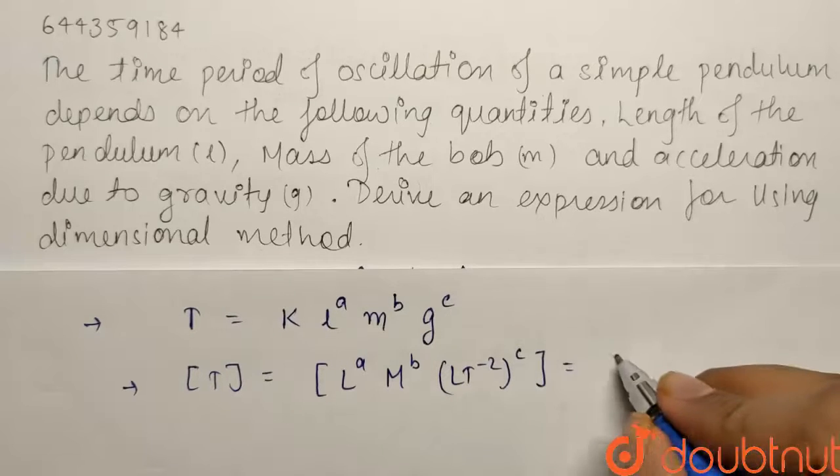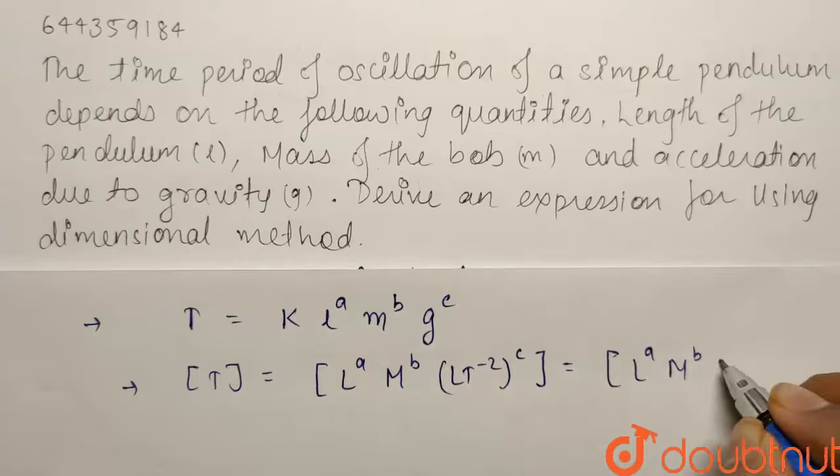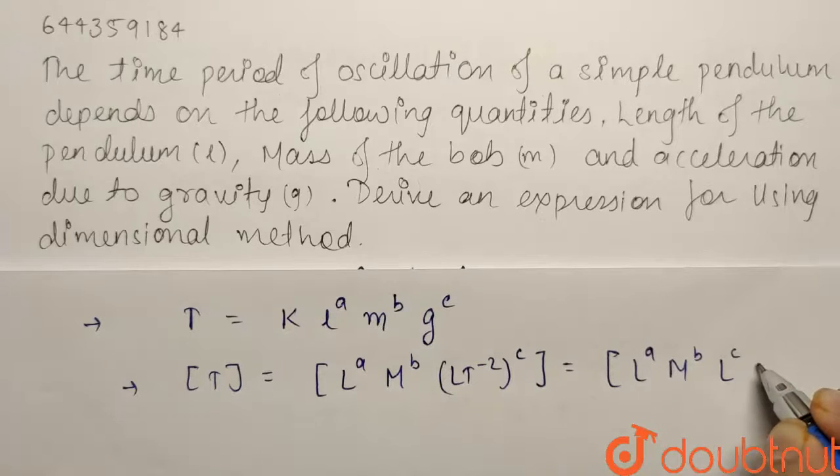So from here we can simplify it, it comes out to be L to the power a, M to the power b, L to the power c and T to the power minus 2c.